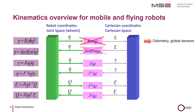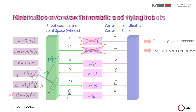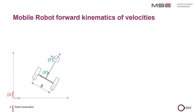We cannot calculate backward kinematics either, which is why we control in Cartesian space and transform the controller values — which are mostly velocities — into the robot coordinate system. Let us now derive the necessary transformations for our mobile robot, starting with the forward kinematics of velocities.